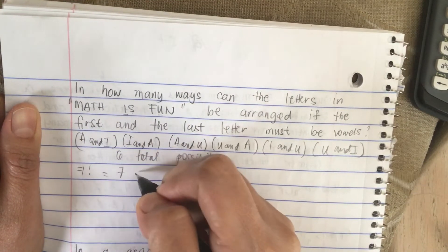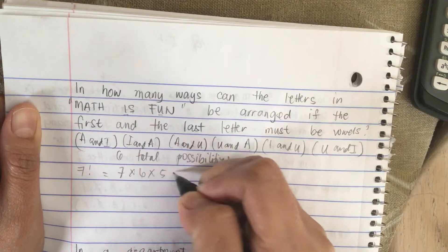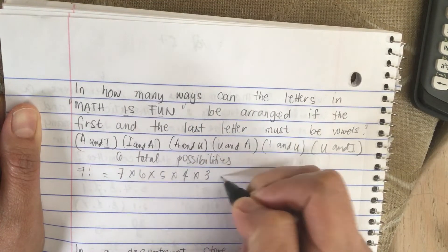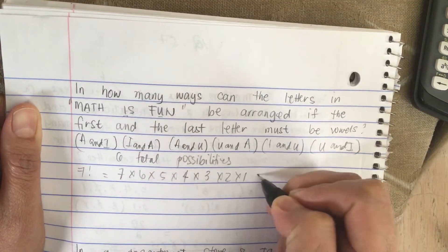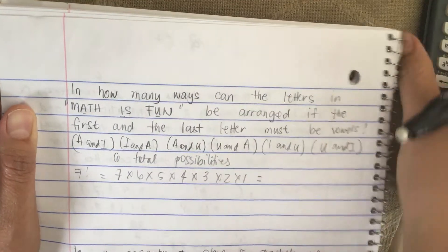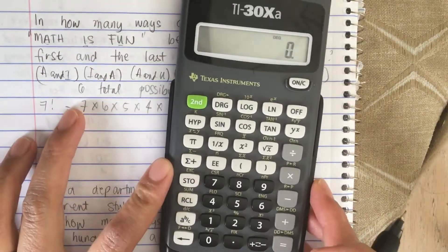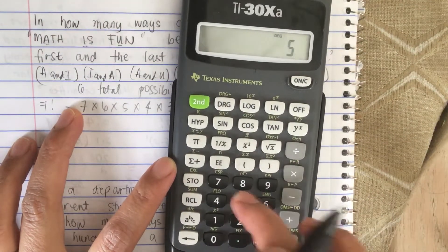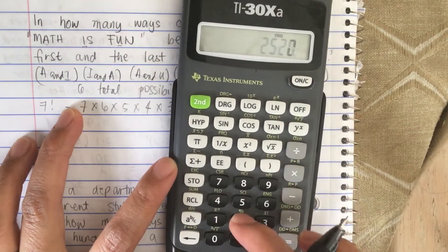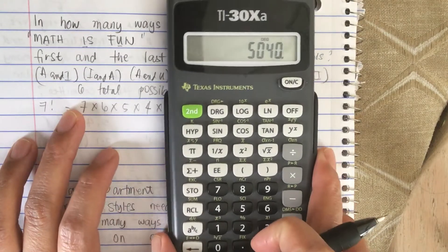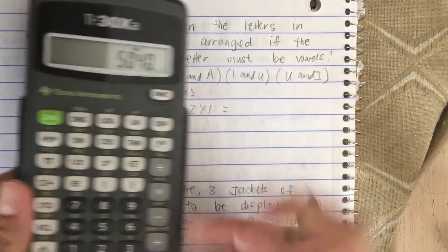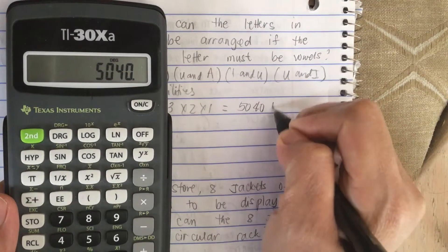This is equal to seven times six times five times four times three times two times one, or this is equal to five thousand forty ways.